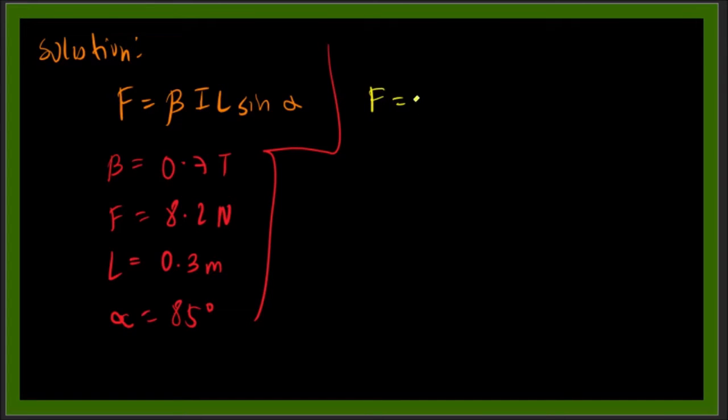So F equals β times L sine α. First, because we're solving for the current, we need to manipulate our formula. Multiply both sides by 1 over β L sine α. If we do this, we'll be left with I on this part of the equation.